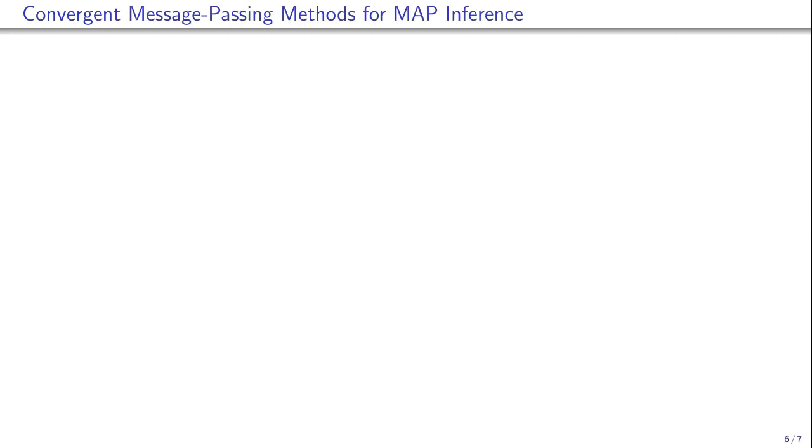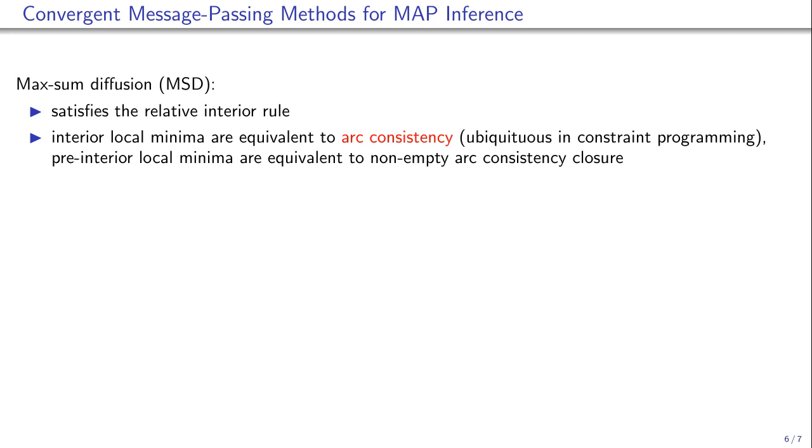How does our theory relate to message passing methods for MAP inference? We'll mention three well-known such methods. Max-sum diffusion satisfies the relative interior rule. Interior local minima correspond to R-consistency, which is well-known in constraint programming.